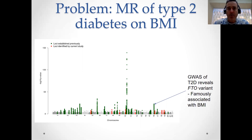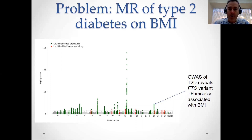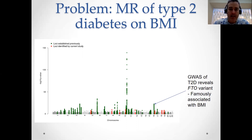Let's imagine, though, that we're interested in investigating whether type 2 diabetes causally affects BMI. How would we go about doing a Mendelian randomization study? Well, the first thing we do is gather instruments for type 2 diabetes — we'd go to a large GWAS of type 2 diabetes and select SNPs that meet genome-wide significance.